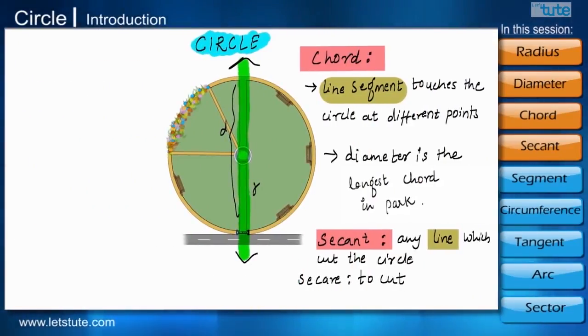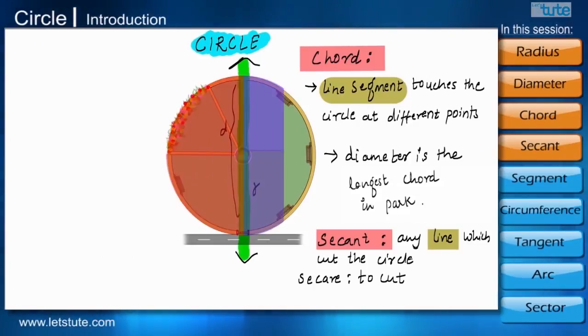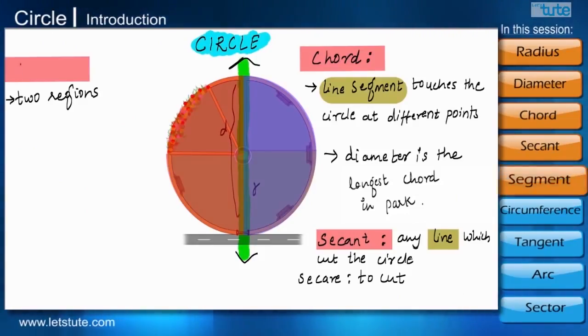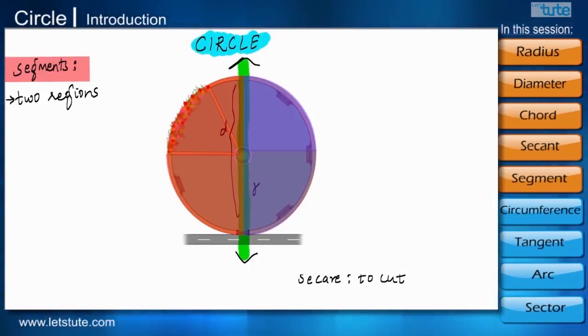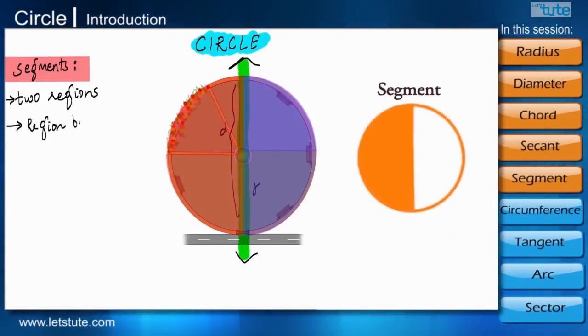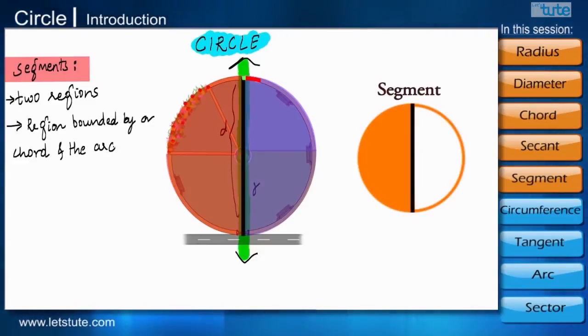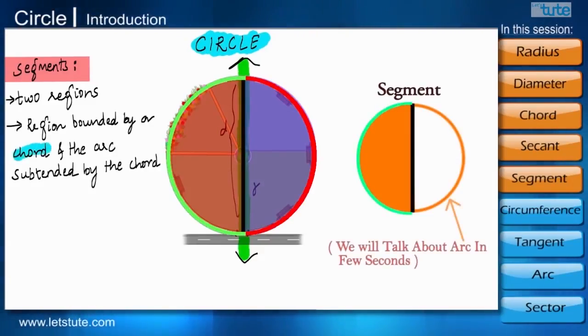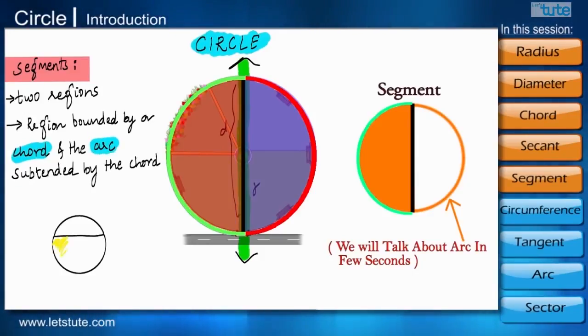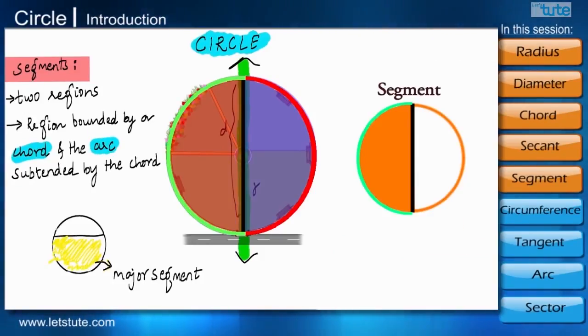Now once we have drawn a chord or a segment, we can see that the park gets divided into two regions. Now these regions are known as segments. The segment of a circle is the region bounded by a chord and the arc subtended by the chord. The larger area is known as major segment and the smaller one is known as a minor segment.